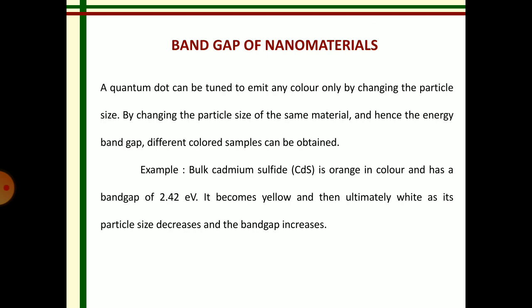A quantum dot can emit any color simply by changing the particle size of the material, and hence by changing the particle size, different band gap energies produce different colored emission samples.